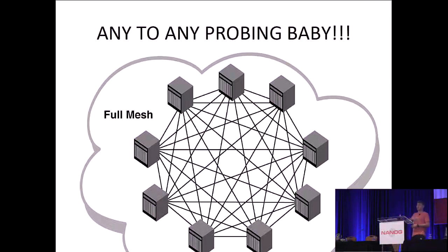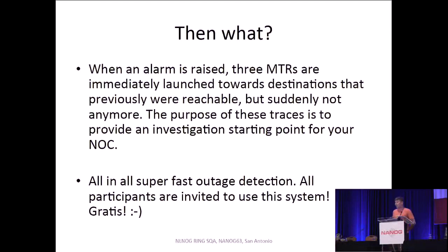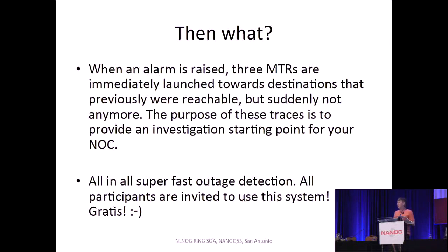This visualizes what any-to-any probing means, really on a scale of 300 nodes. When the alarm is raised, MTRs — or traceroutes — are immediately launched to nodes that were previously reachable but are no longer reachable. These traceroutes are launched in hopes of catching the point where something broke — it could be leading you toward an internet exchange, or it might show that three nodes that were previously reachable but aren't anymore share a common upstream. These traceroutes help you identify that and give you a direction to search for the outage.